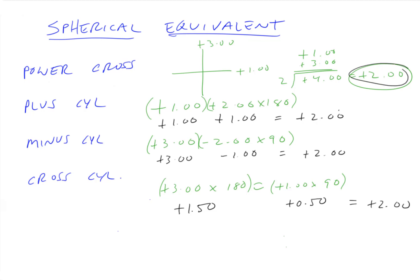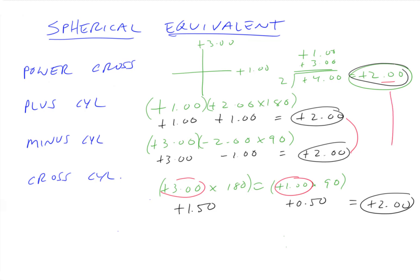So all of these come out the same. For plus and minus cylinder notations, we take the spherical lens and add half the power of the cylindrical lens. For the power cross, we average the two. For cross cylinder, we find the spherical equivalent of each and add them — or we can average the two: plus one plus three is plus four divided by two. The first and fourth methods and the second and third methods can actually be solved in similar ways. That is spherical equivalent.